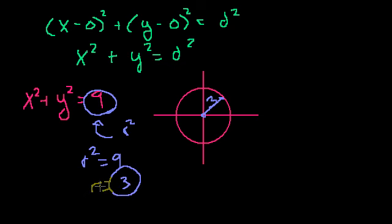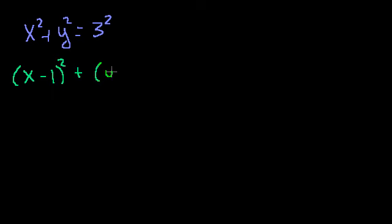But in a lot of algebra classes, they complicate the issue a little bit by shifting the circle. So let's just shift this circle. And so the unshifted circle was x squared plus y squared equals 3 squared. That's the same thing as 9. And let's say that the new circle, the shifted circle, is (x minus 1) squared plus (y plus 2) squared equals 3 squared.